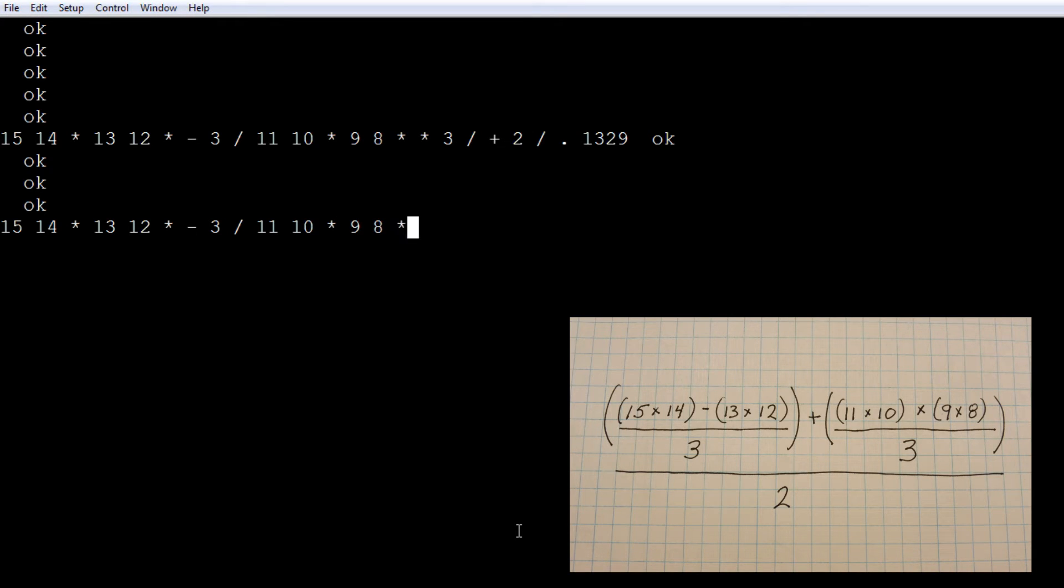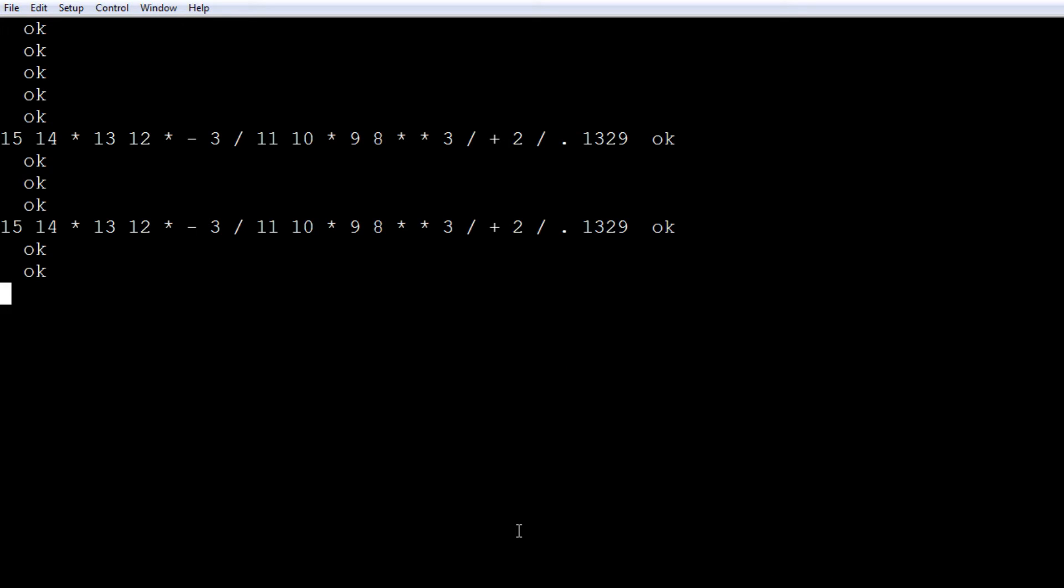Then we take 9 and 8 and multiply that. Now we multiply the 2 stacks. That's the second multiplication. Then we divide by 3. Then we add the left hand side of the equation and the right hand side of the equation. And then we divide by 2 and we get our answer: 1329. So that's how we do it using Forth using reverse Polish notation, and it's very fast and efficient.